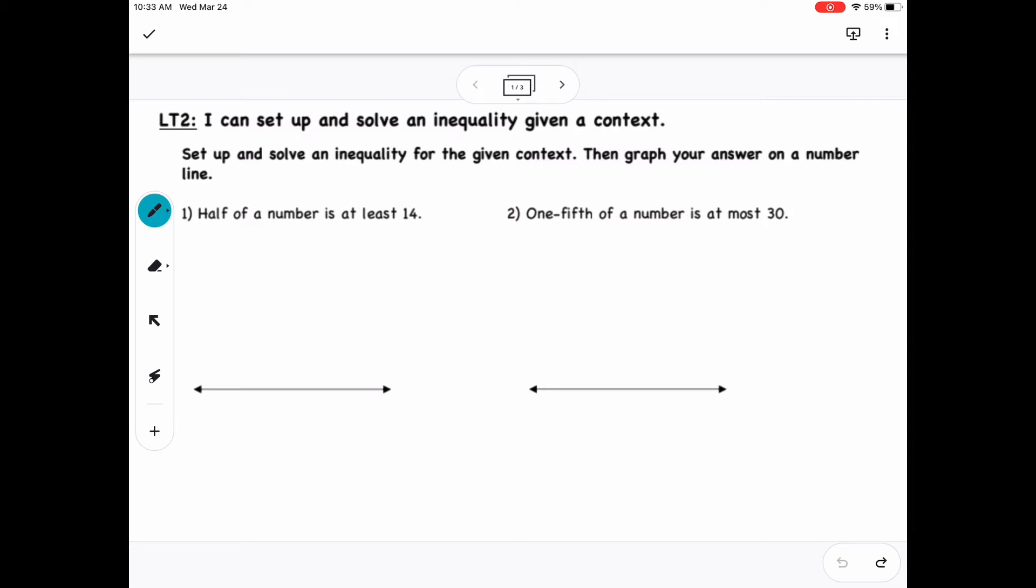Today's lesson is over learning target 2, which states that I can set up and solve an inequality given a context. So here you're going to be given a sentence, and then we'll need to write the inequality from that sentence, and then solve and graph it on a number line.